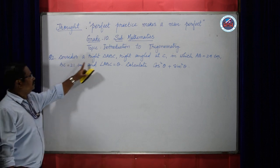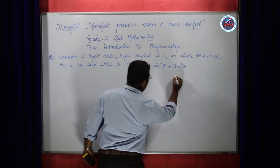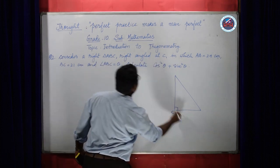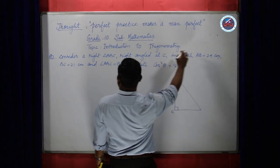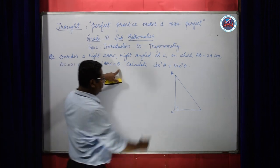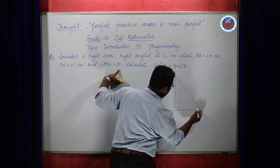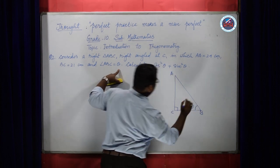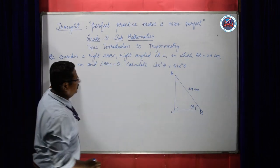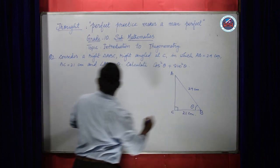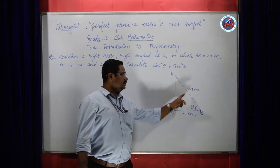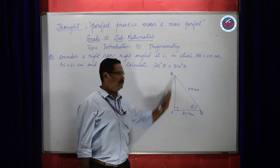You will have to follow the problem. You are asked to consider right triangle ABC. So draw one right angle triangle ABC with 90 degrees at C. AB is 29 cm — that is the hypotenuse. BC is 21 cm. Angle ABC is theta, meaning this angle B is given as theta. Two sides are given and one side AC is missing, so I can use the Pythagoras theorem to find the third side.